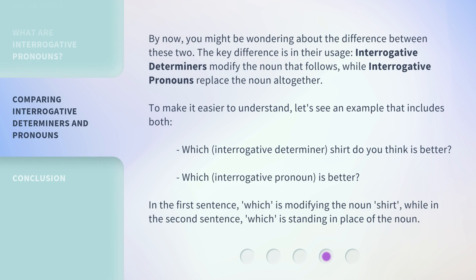By now, you might be wondering about the difference between these two — the key differences in their usage. Interrogative determiners modify the noun that follows, while interrogative pronouns replace the noun altogether. To make it easier to understand, let's see an example that includes both. "Which" as an interrogative determiner: Which shirt do you think is better? "Which" as an interrogative pronoun: Which is better?